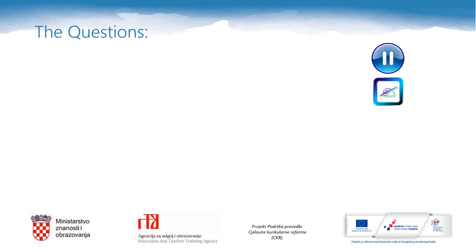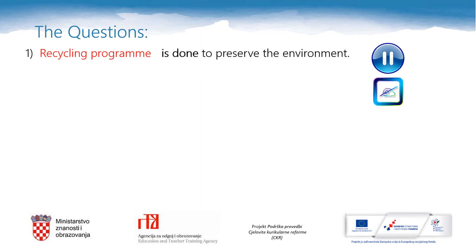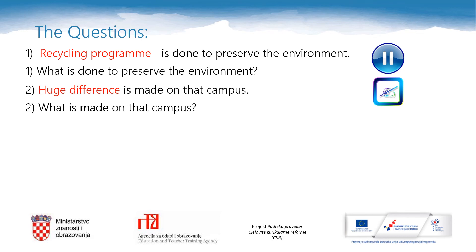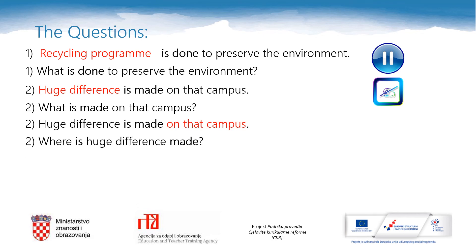Let's check your questions — it all depends on the information that you look for. In the first sentence, recycling program is done to preserve the environment. We can only replace recycling program with the question word WHAT. So our question is: What is done to preserve the environment? In the second sentence, huge difference is made on that campus. Our question can be: What is made on that campus? But there is another possibility — on that campus refers to a place, so our question can also be: Where is a huge difference made?